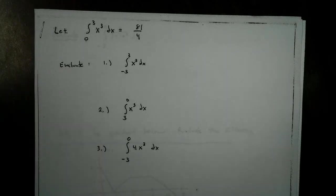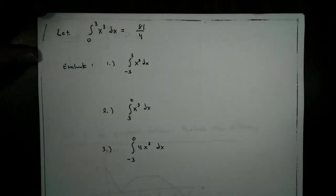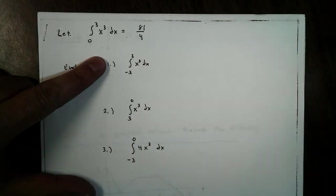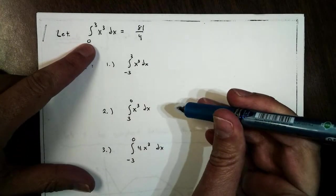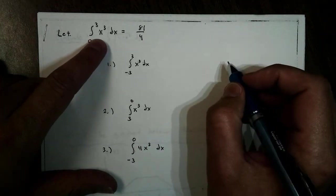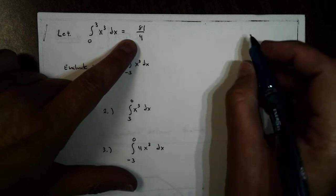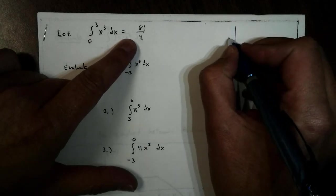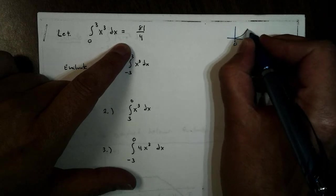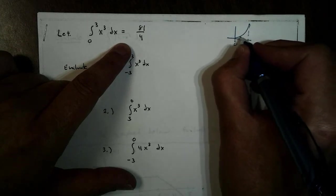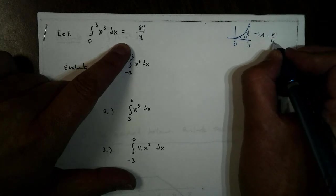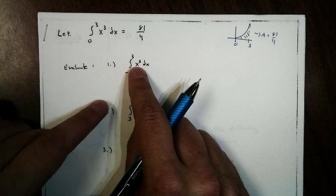Hey, welcome back. We're going to take a look at some applications of the integral. So we saw this problem a while back ago, and this is just an area problem. We're saying the area under this cubic graph from 0 to 3 is 81 over 4.